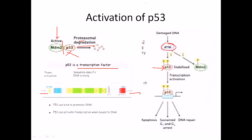ATM senses the signal and phosphorylates p53. Not only is p53 phosphorylated, but ATM also phosphorylates MDM2. When MDM2 is unphosphorylated it is in active form and degrades p53. When MDM2 is phosphorylated it becomes deactivated. So in normal situations with no DNA damage, MDM2 is active, there is no phosphorylation, and MDM2 cleaves p53 and helps degrade it via the proteasome complex.